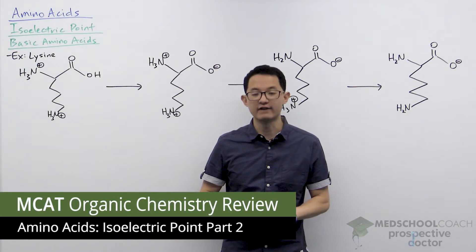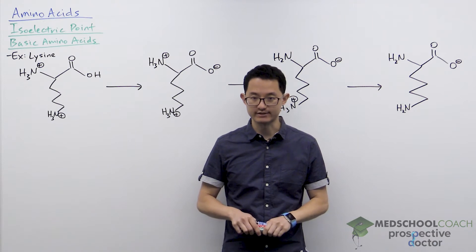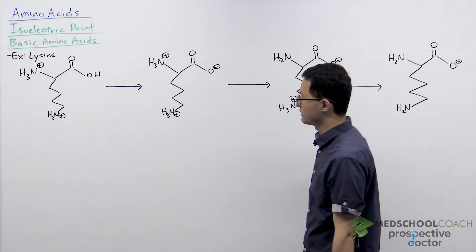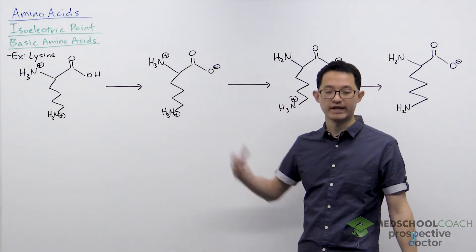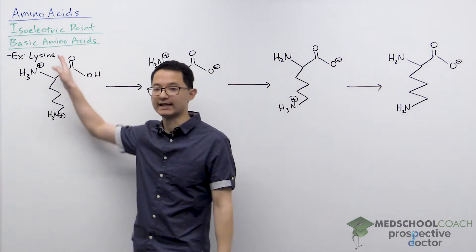In this video we're going to look at how to calculate the isoelectric point of basic amino acids. To demonstrate this, we're going to look at one of the three basic amino acids. In this case, we're looking at lysine.